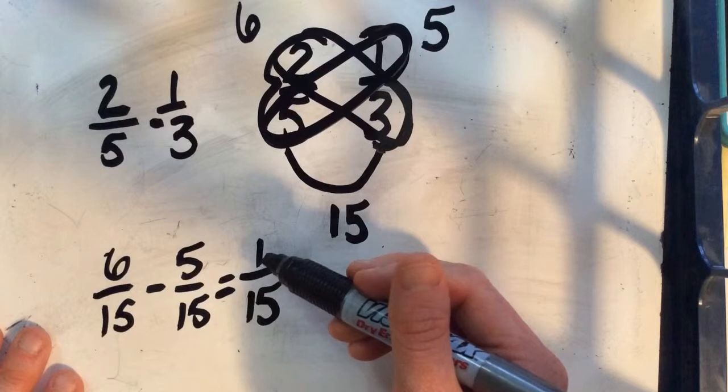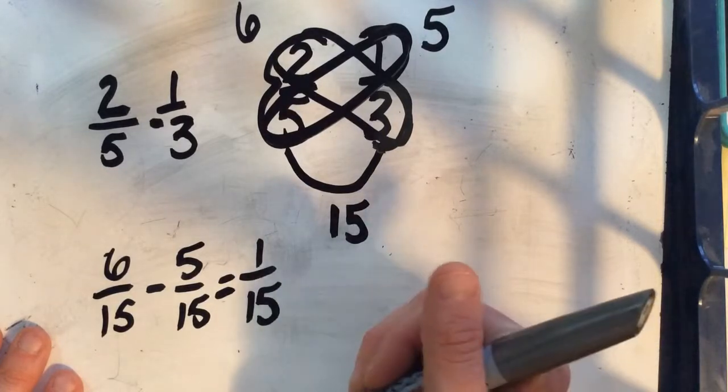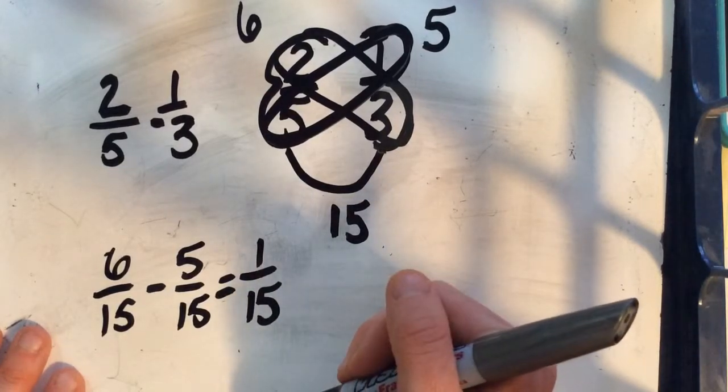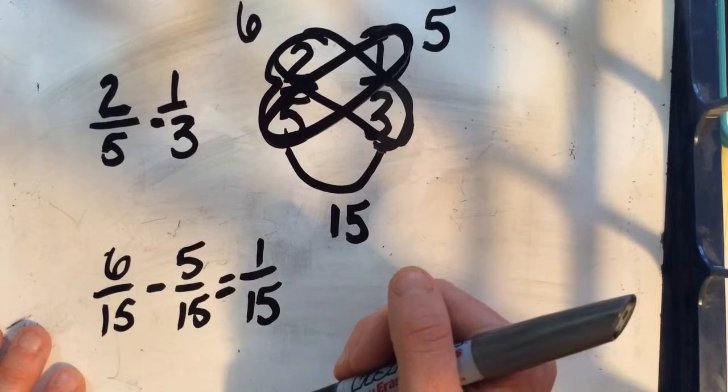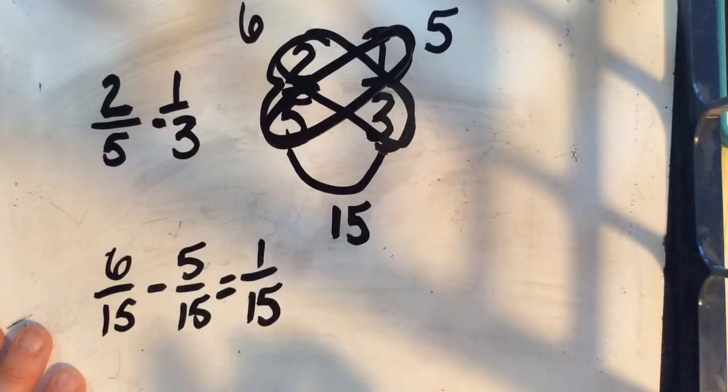So that's the butterfly method. You can use it to add and subtract fractions with unlike denominators.